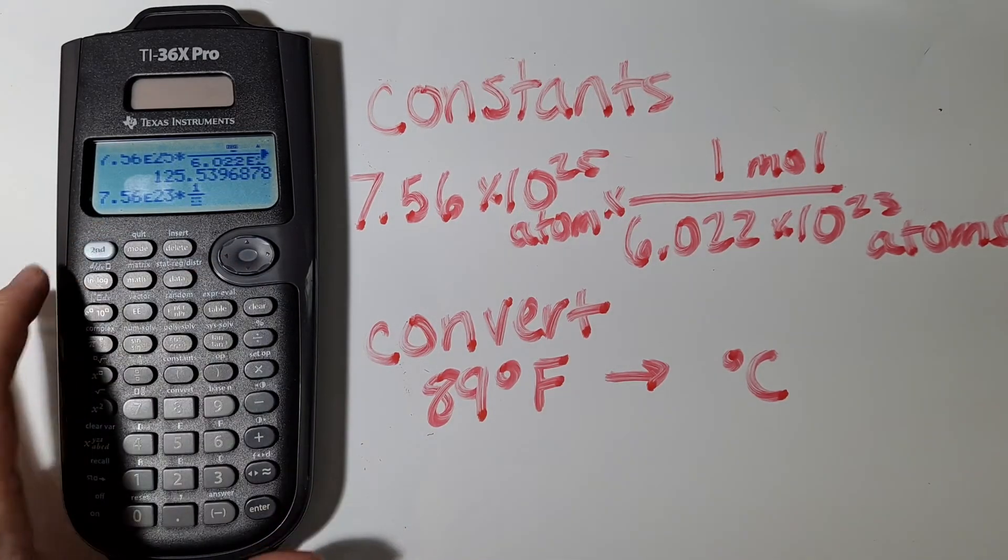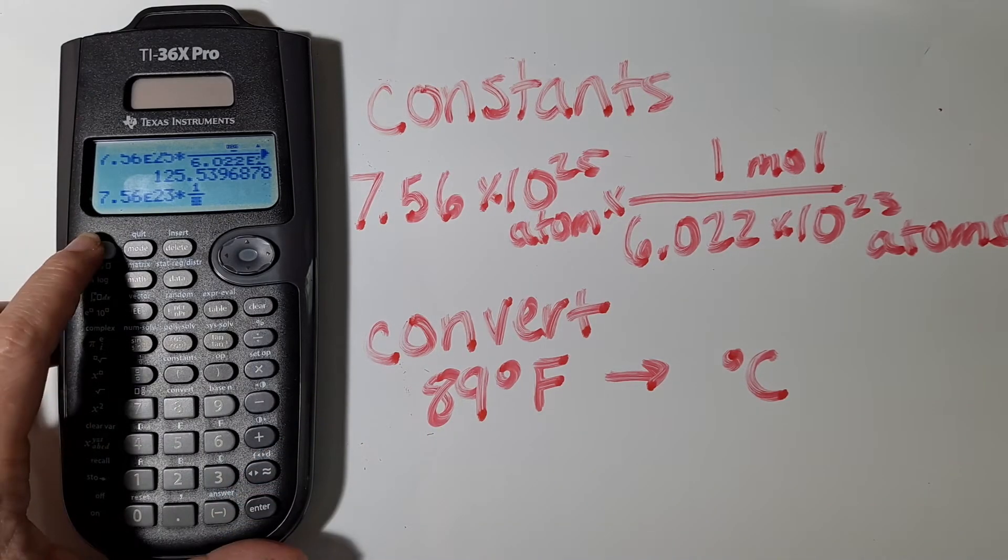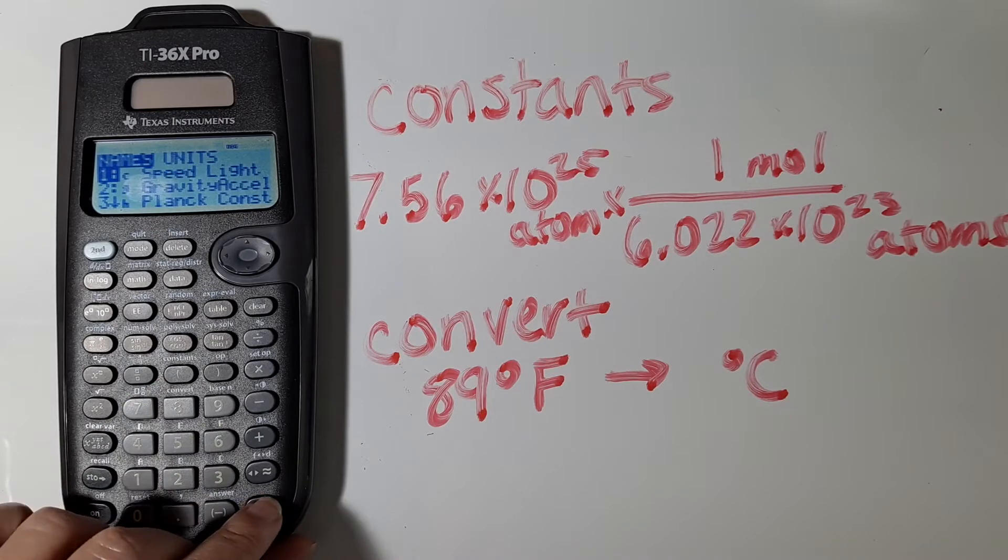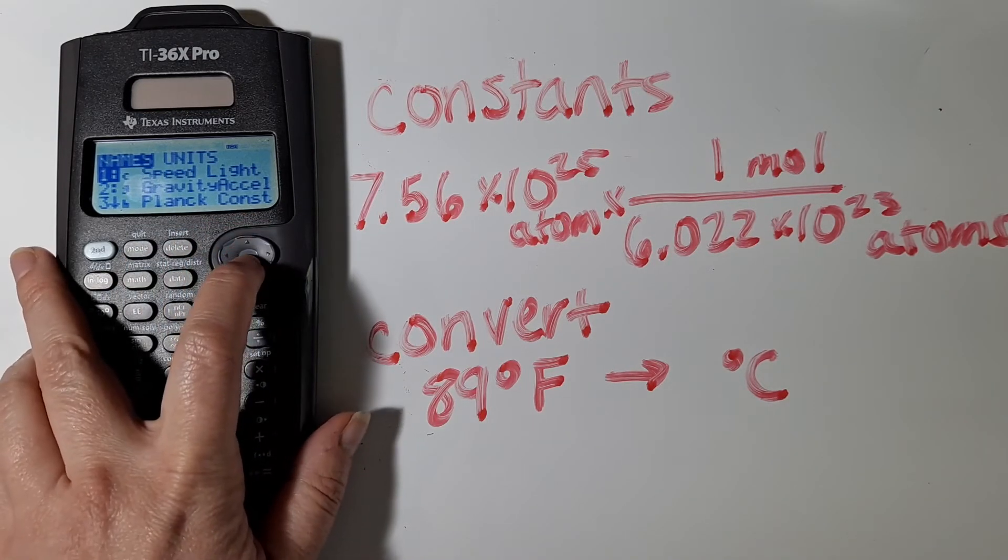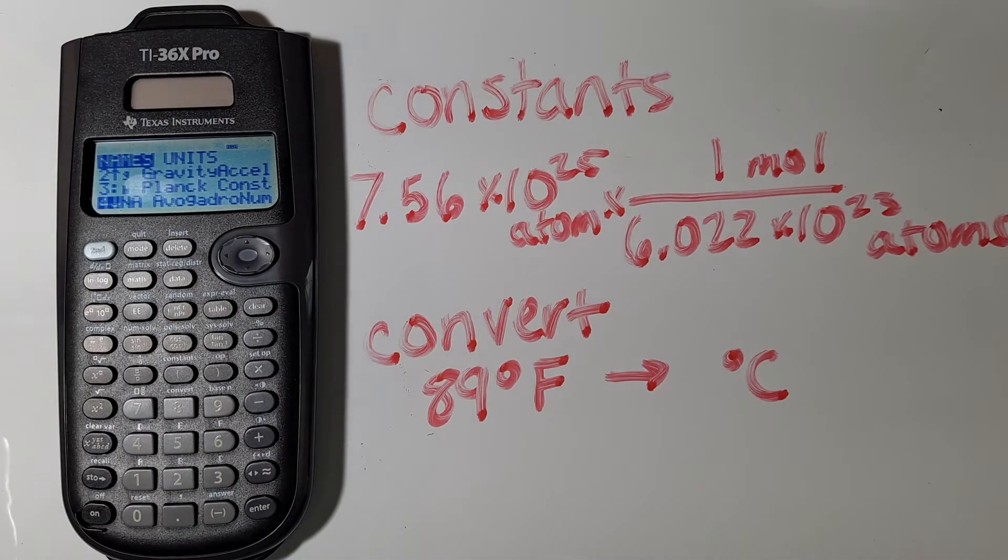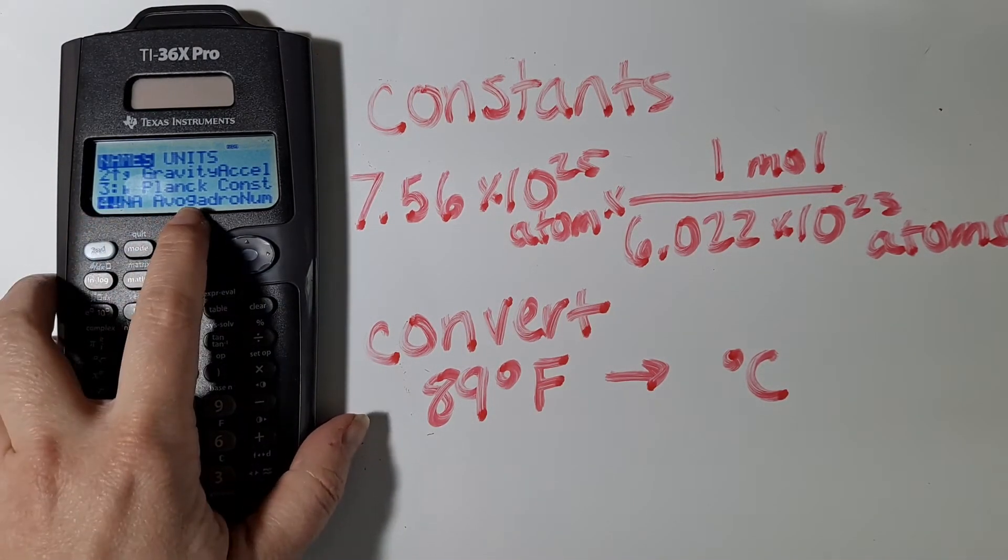I could be typing in, and then where I want Avogadro's number to occur, I can go 2nd, and then open parentheses to get into my constants menu. And you can see here that it lists off a whole bunch of constants that it already has stored. And option number 4 corresponds to Avogadro's number.